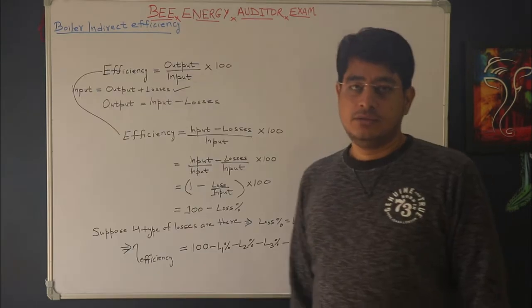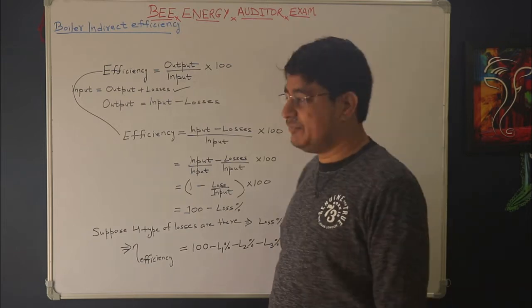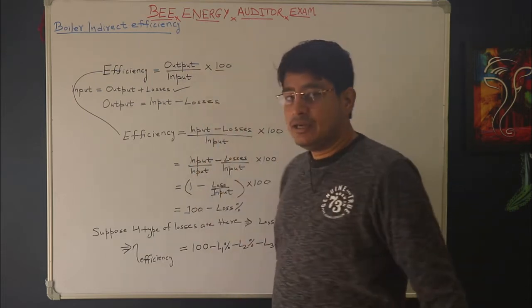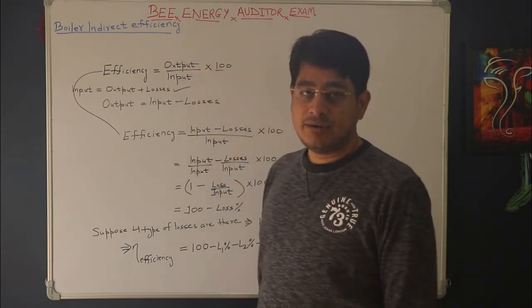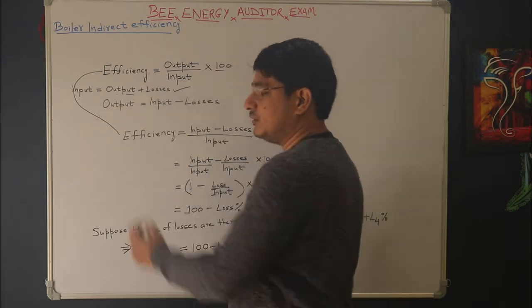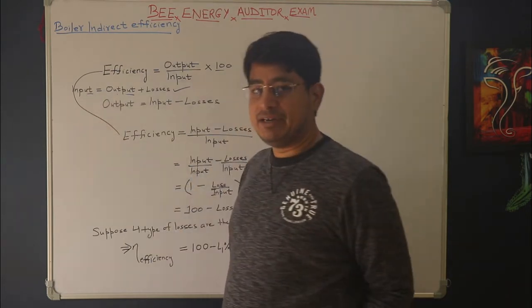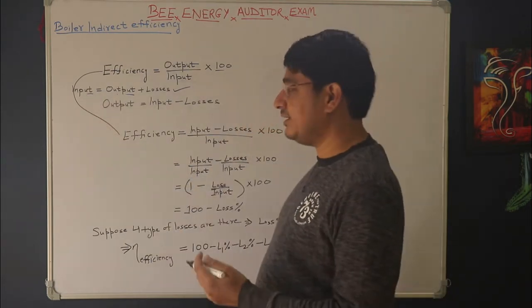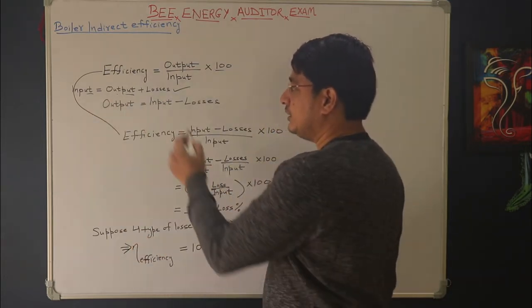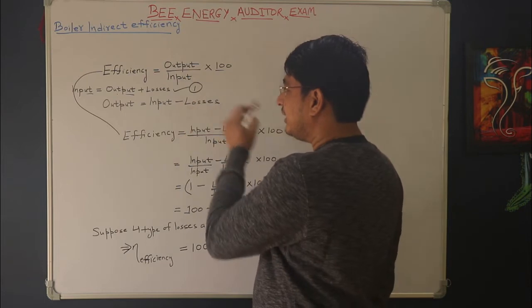What is efficiency? Efficiency is nothing but the ratio of output to input multiplied by 100. In any system, some losses are inevitable, so whatever output you receive is definitely going to be less than the input you have given. Accordingly, I can write this as: input = output + losses (Equation 1).